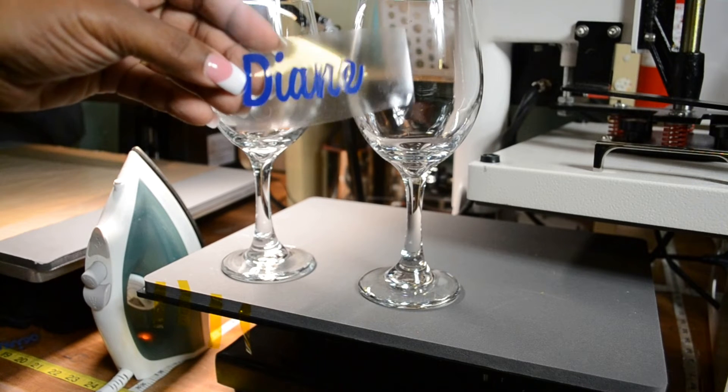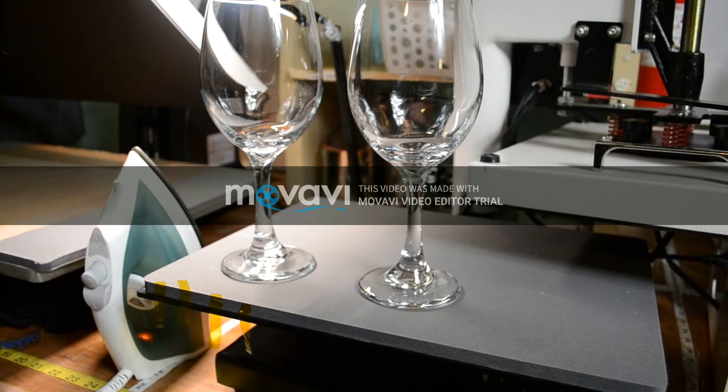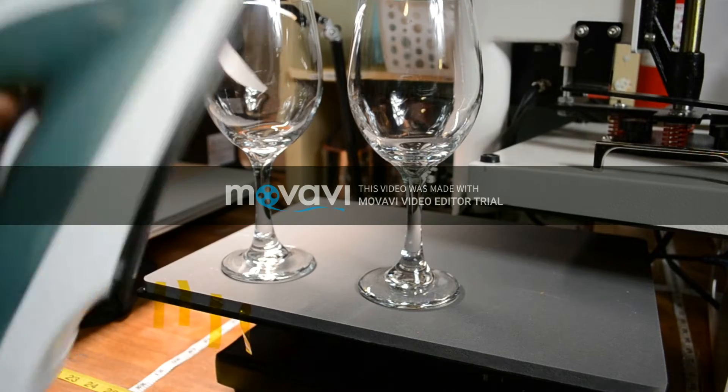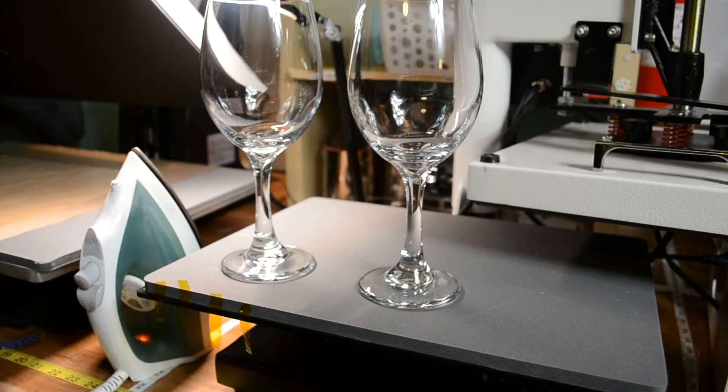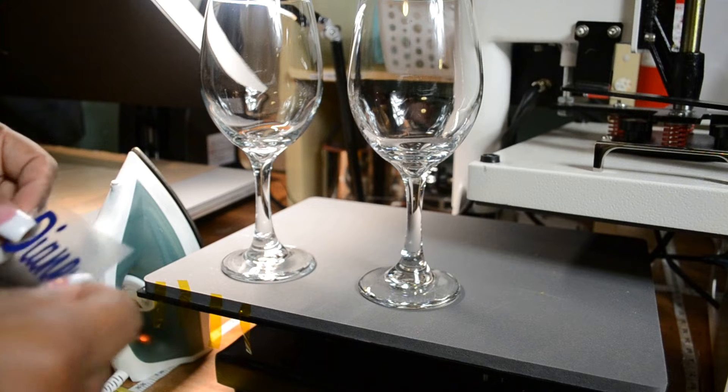Okay, and so this is the EasyWeed Caesar brand. It is called Electric and this is their blue. I am also going to be using heat transfer tape as well as a regular standard iron. And these are the irons that I used in my sewing studio and so today we are going to use it to adhere the heat transfer onto the glass.